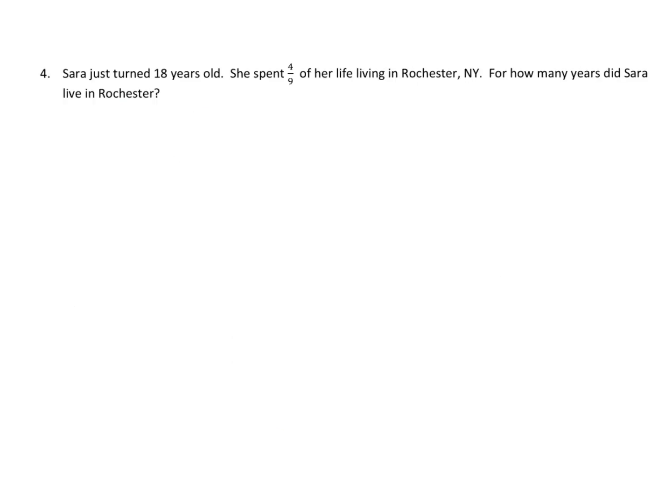Our last problem for this video. Sarah just turned 18 years old and she spent four ninths of her life living in Rochester, New York. For how many years did Sarah live in Rochester? The first thing we're going to do is we're going to make an array. We're going to use 18 dots and we're going to make an array. Because the denominator over here is 9, I'm going to make each row of that array have 9 dots.